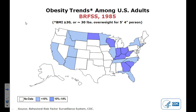This first map is from 1985. The states in light blue have about a 10% obesity rate in their total population. The darker blue color represents a 10 to 14% obesity rate. White simply means they haven't collected the data yet. Eventually all states will be collecting data, and we're going to see a trend of increasing obesity as we go through each map from 1985 to 2010.